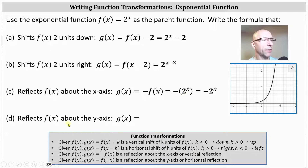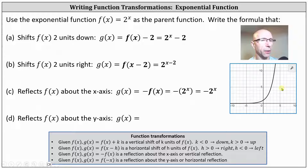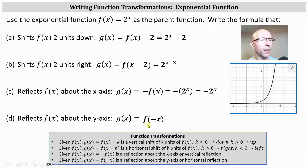Part D reflects f of x about the y-axis. If something's reflected across the y-axis, the signs of the x-coordinates must change. Looking at our notes, given f of x, g of x equals f of negative x is a reflection about the y-axis or horizontal reflection. This indicates for D, we have g of x equals f of negative x, which is two to the power of negative x.